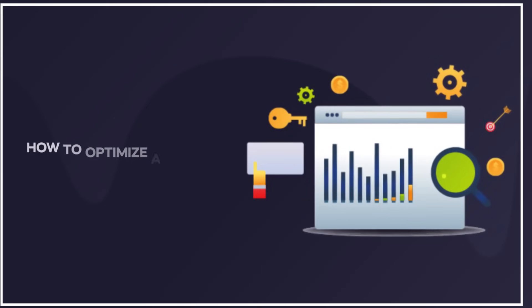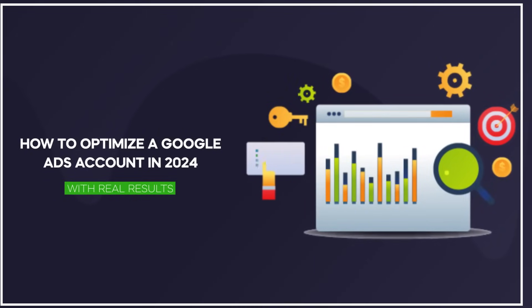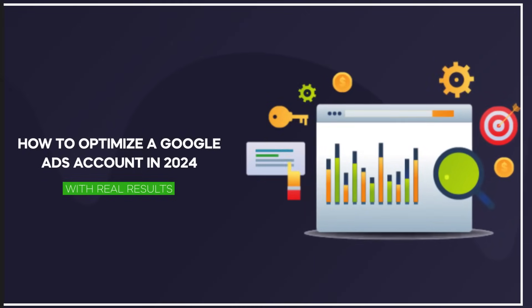Ladies and gentlemen, in today's video I'm going to walk you through how to optimize a Google Ads account in 2024 with real results. We're going to show you what our team actually did — how we were able to essentially quadruple the amount of leads within 60 days, two months, by doing the basic things you should be doing inside an account.